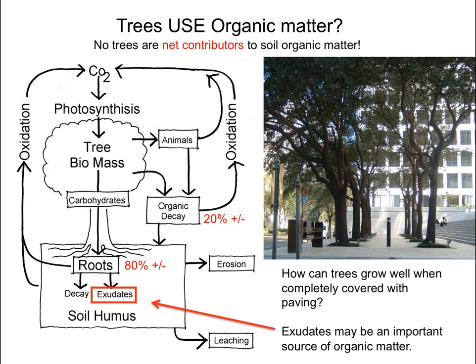The next myth is that trees use organic matter — that they're going to eat up all of the organic matter and it will disappear. Here's a set of trees that have never had a single leaf dropping into the soil, yet there's actually some pretty good soil underneath the paving and the trees are growing well. The reality is that trees are net contributors of organic matter to soil, because most of the organic matter comes from the roots, not from the decaying material falling from the canopy.